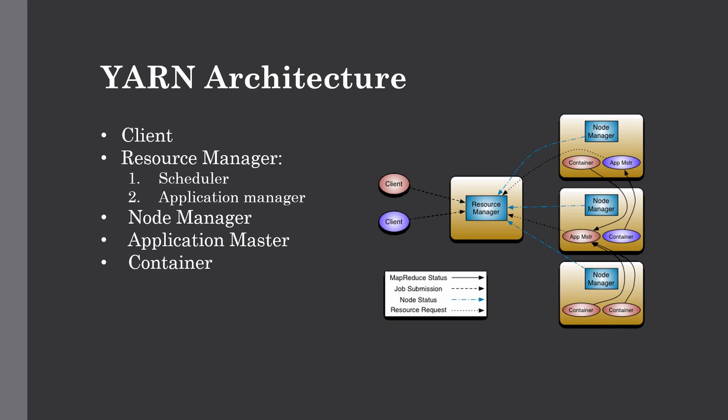The scheduler is used for scheduling based on the allocated application and available resources. It does not perform other tasks such as monitoring or tracking, and it does not guarantee a restart if a task fails. The application manager is responsible for accepting the application, negotiating the first container from the resource manager, and restarting the application if a task fails. The scheduler is only meant for scheduling based on allocated resources, while the application manager handles negotiation and restarting failed applications.